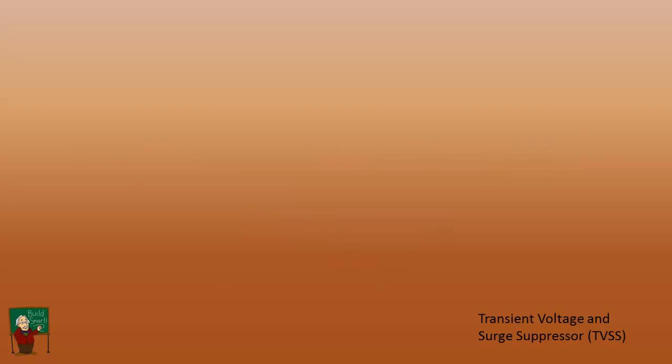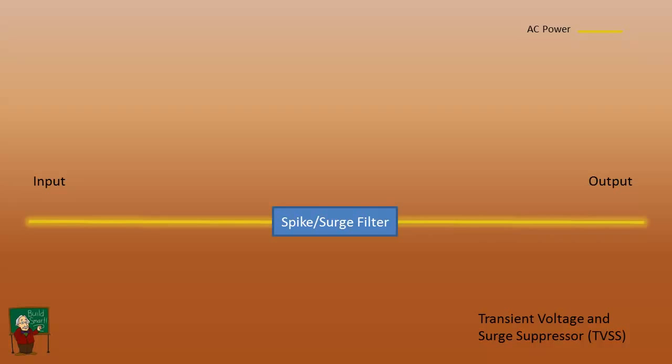Let's start out with the transient voltage and surge suppressor or TVSS. We have basically power in and power out. This operates as a surge protector. You can see power on the line. As a surge comes in, this blocks them from passing through.